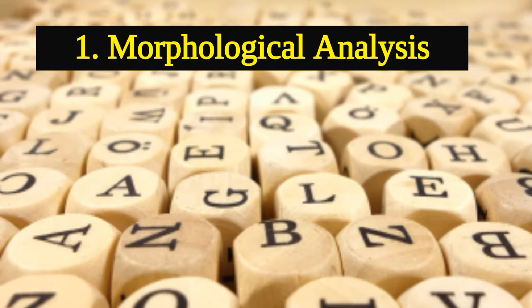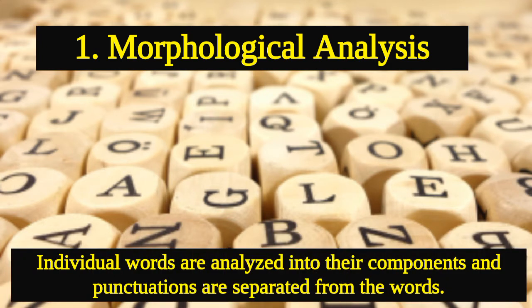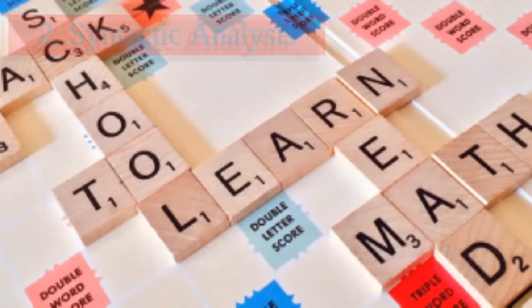The first is morphological analysis. In this phase, we analyze every word into its alphabets or components, and non-words such as punctuation marks — comma, full stop, semicolon, colon — are separated from the words. So individual words are analyzed into their components and punctuations are separated from words.